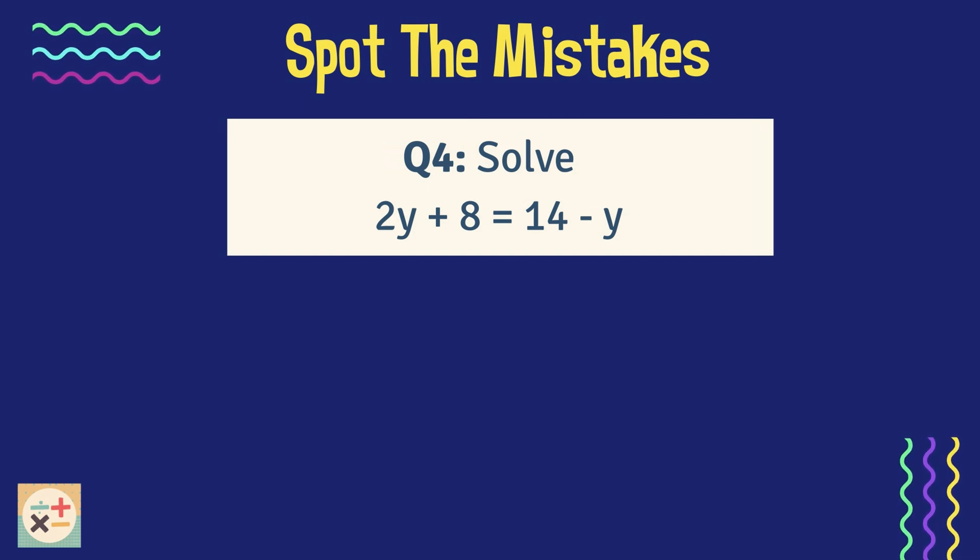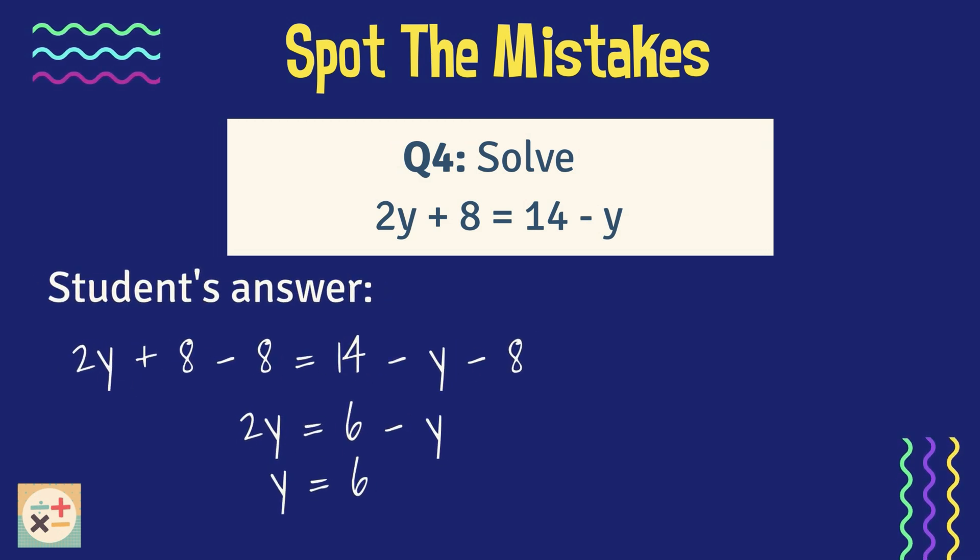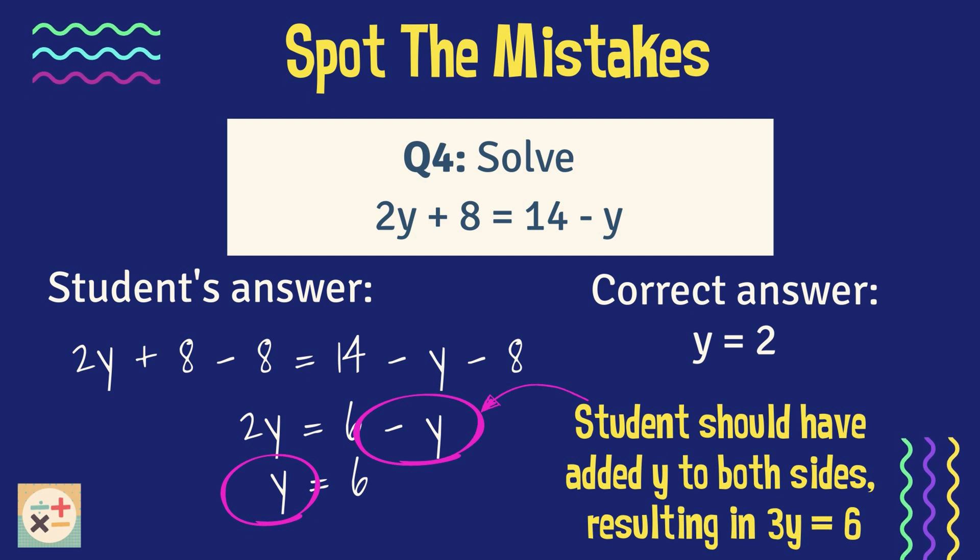Question 4. 2y plus 8 equals 14 minus y. See if you can spot the error in the student's calculations. The student has incorrectly calculated y to equal 6. However, the correct answer is y equals 2. Here, the mistake was made when the student took y away from both sides. Should they have instead correctly added y to both sides of the equation to cancel out the minus y, they would have ended up with 6 equals 3 lots of y, instead of 1y. They would have needed an extra step to find out what y on its own equals.